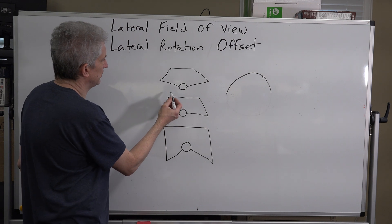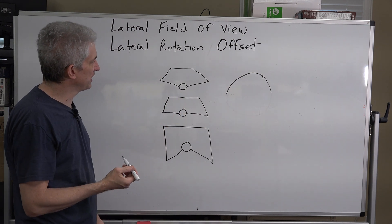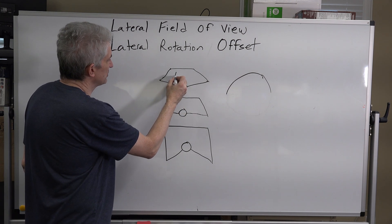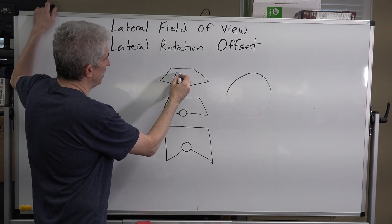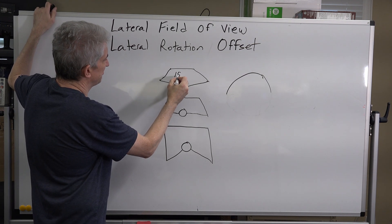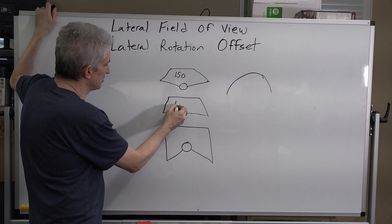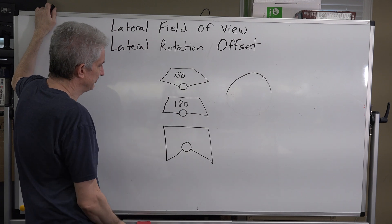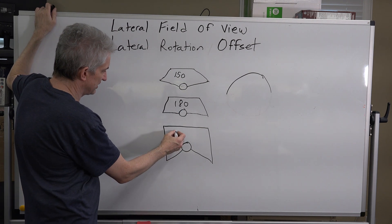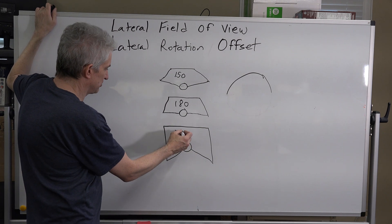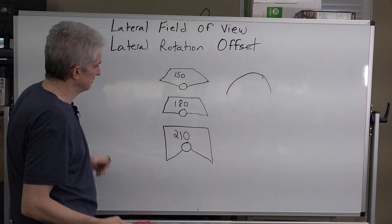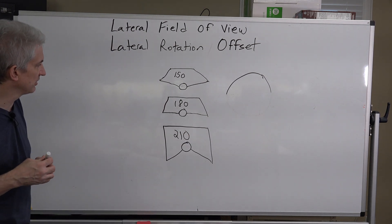So I would assign this one, if I consider a circle to be 180 degrees, I would say this is about 150, something like that. I would say this is a perfect 180. And I would say this guy is, let's say 210, to keep things nice and easy.